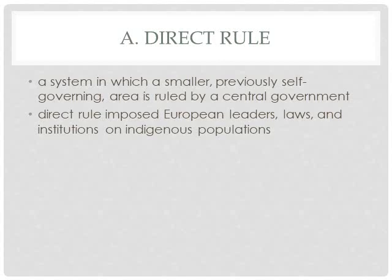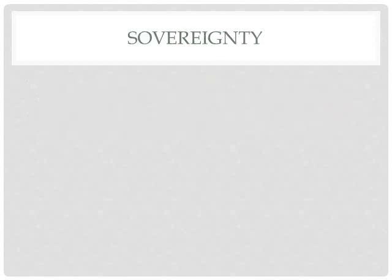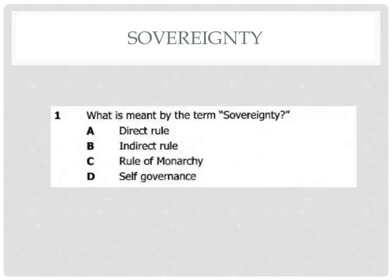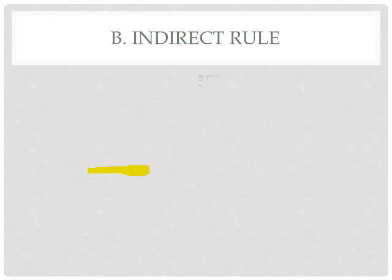Direct rule meant that European leaders, back in the old days, imposed laws and institutions on indigenous populations — rulers just imposed their rule on the people. Going back to the question, we've looked at direct rule, so the next option is indirect rule.